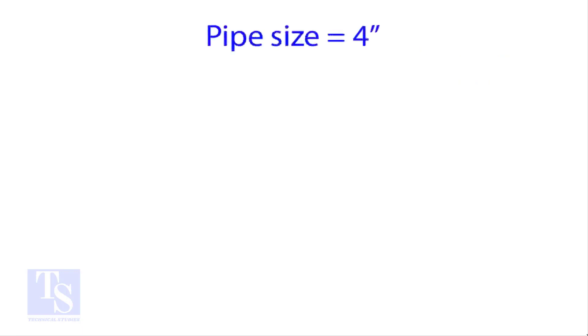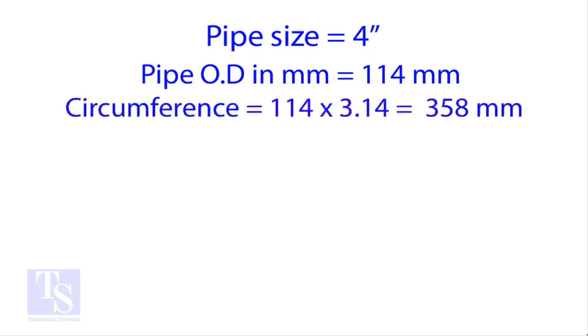Let us try an example. Calculate the cutback of a 4 inch pipe with 4 cuts. OD of a 4 inch pipe is 114 millimeters. Multiply the OD by 3.14 for the circumference. The bend angle is 90 degree. Number of cut is 4.